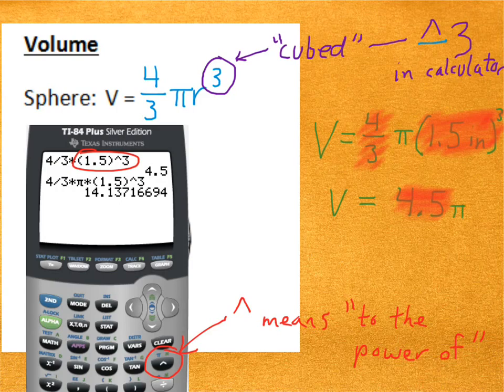You can see from my calculator there that the stuff that's 4 thirds times the 1.5 cubed is just 4.5. So, my volume would be 4.5 pi, then my units inches cubed because the inches in the formula where I plugged it in up here were cubed.